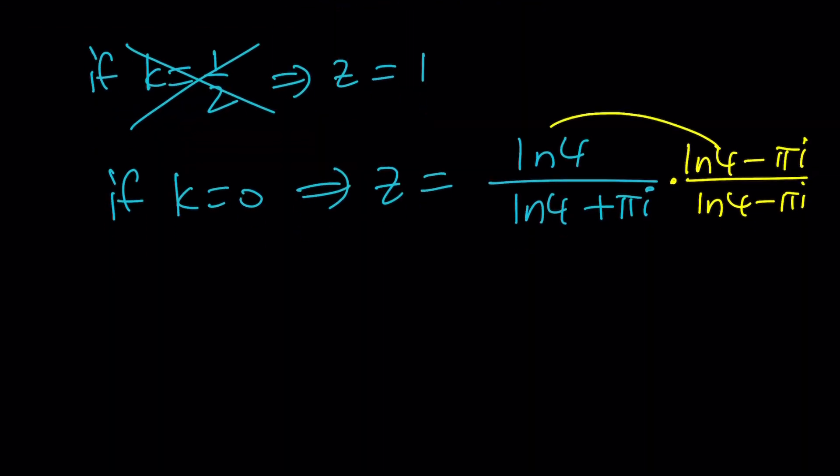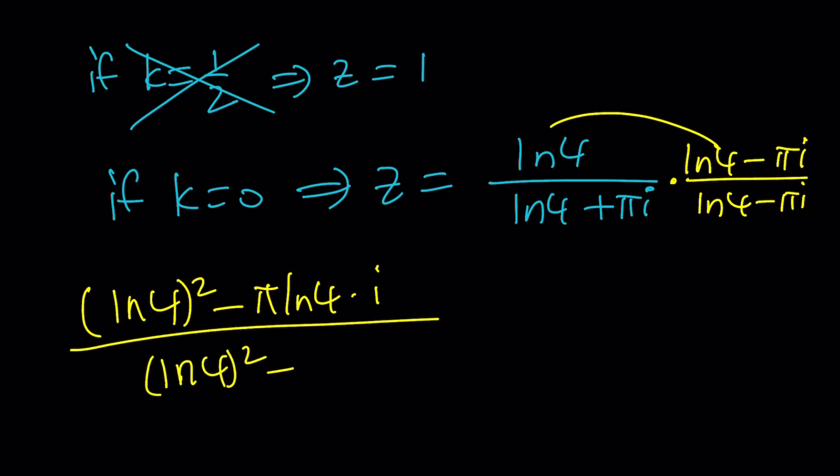We're going to multiply by the conjugate of the denominator, which is going to give us this. And then, if you distribute, you're going to get ln 4 squared minus pi ln 4 times i divided by ln 4 squared plus pi squared. Because i squared is negative 1.